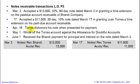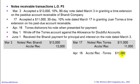On April 16th, Torres dishonors his note when presented for payment. That covers from March 17th until April 16th — that's how much interest we have to show as earned. We will debit accounts receivable — Torres — for $11,092, which is $11,000 principal and $92 interest.